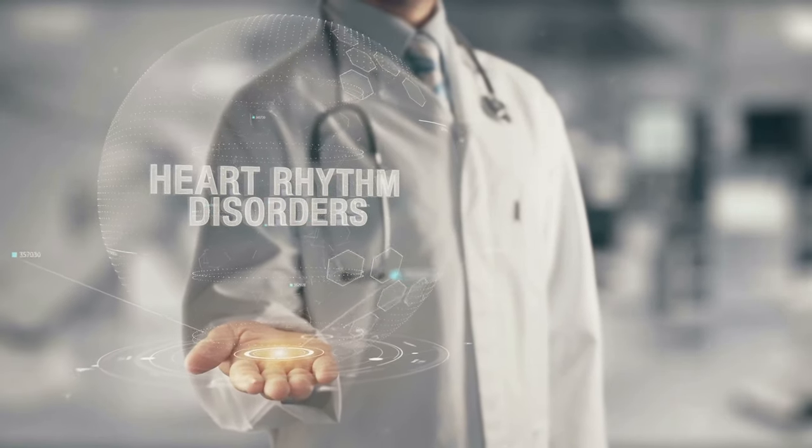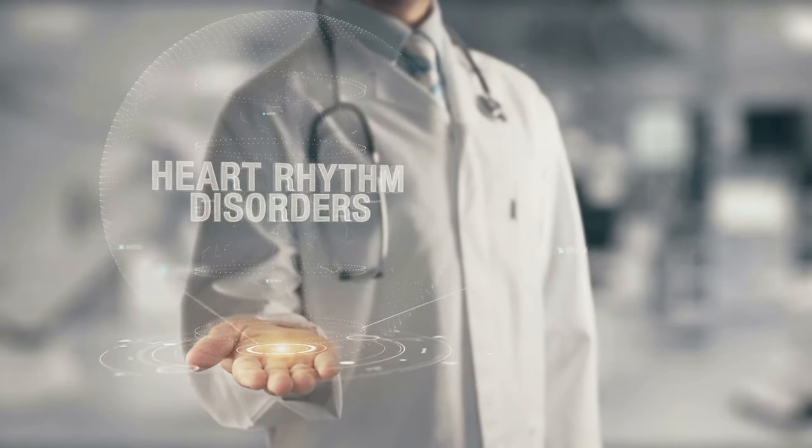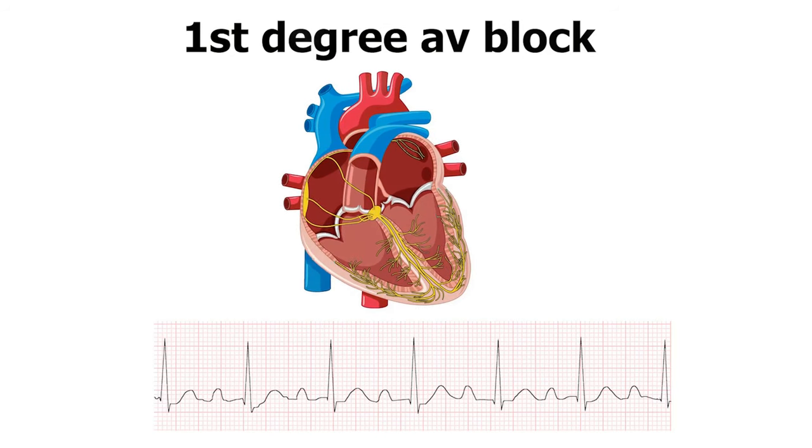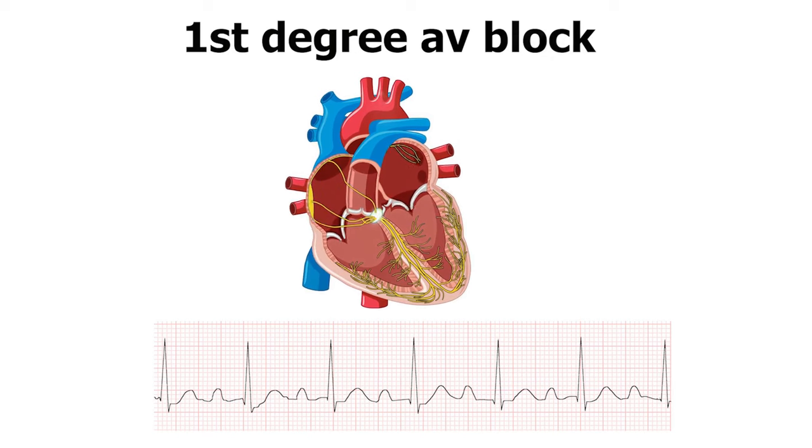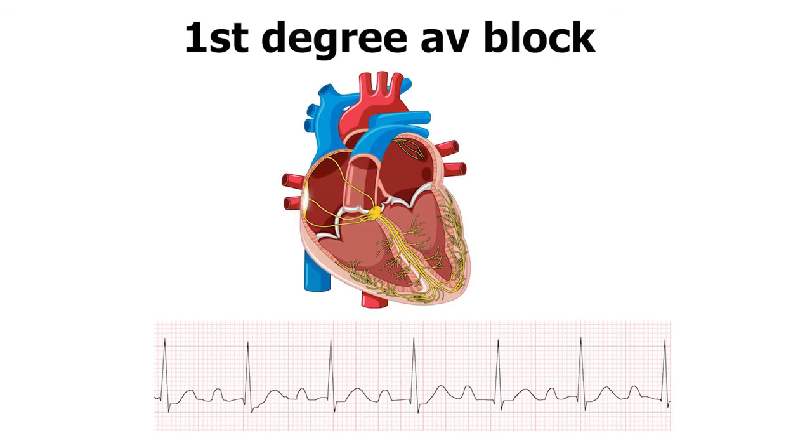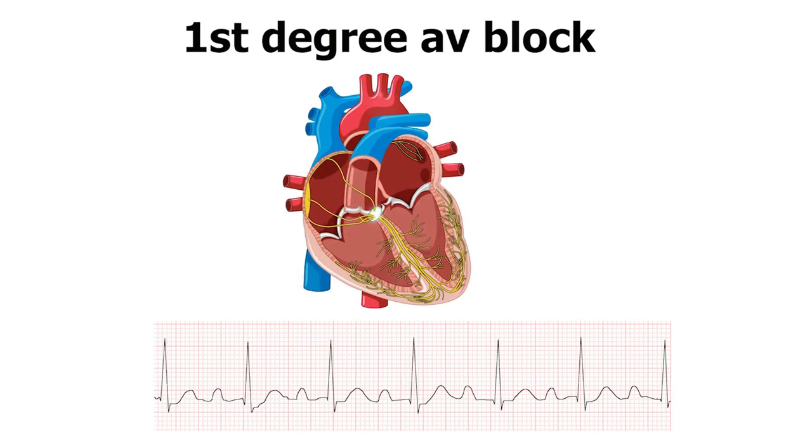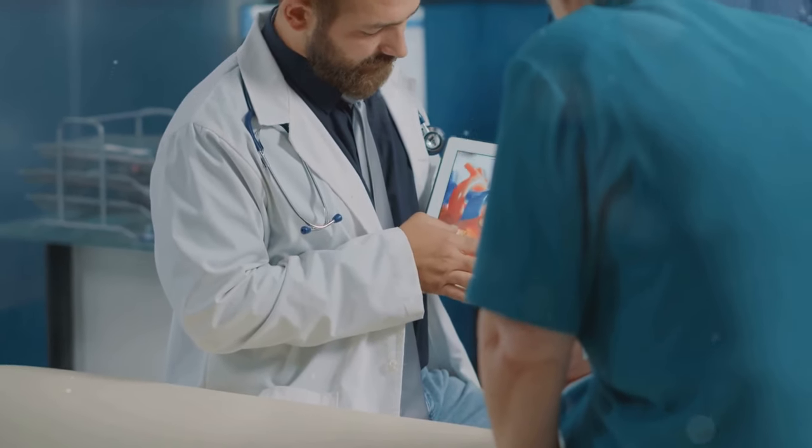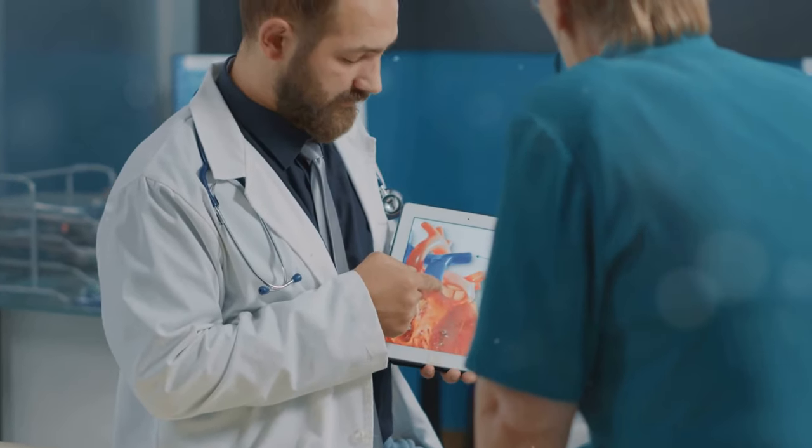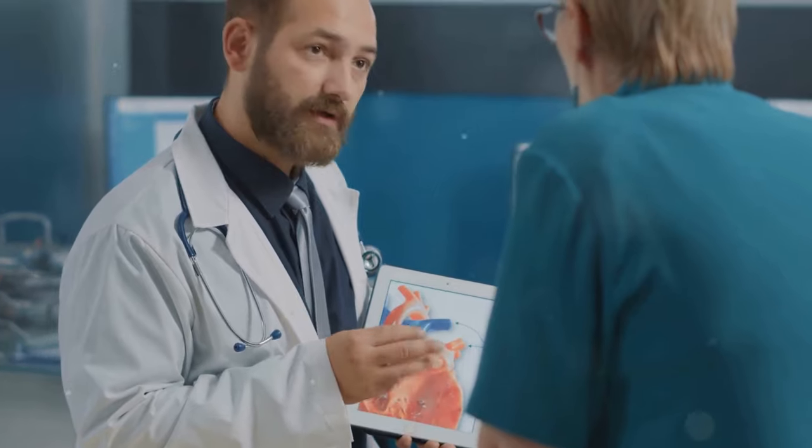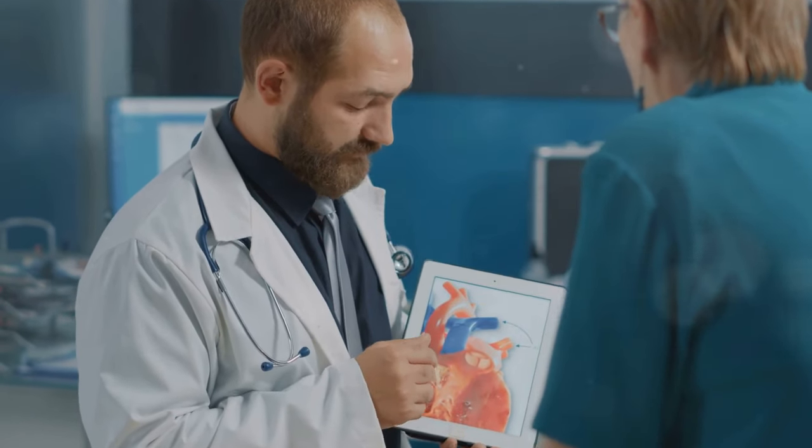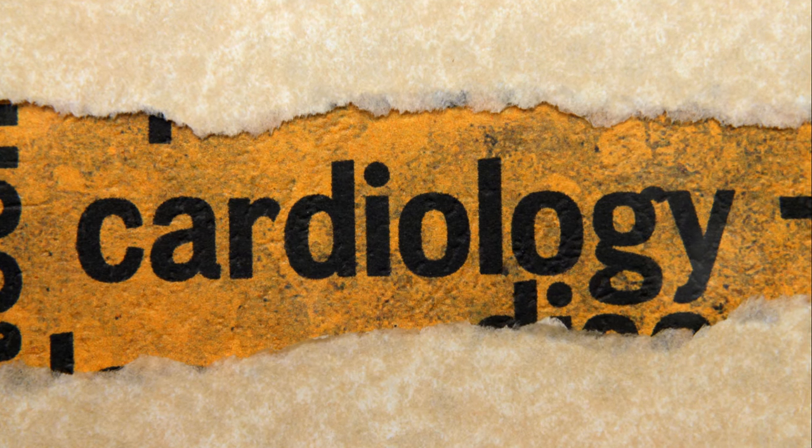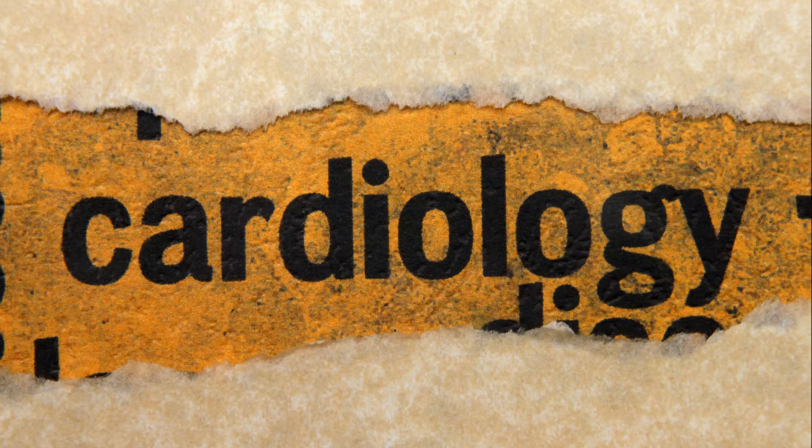ECG abnormalities can manifest in various ways, each pattern hinting at a specific underlying condition like heart block or atrial fibrillation. By recognizing these telltale signs, physicians can initiate appropriate investigations and treatment strategies, improving patient outcomes.